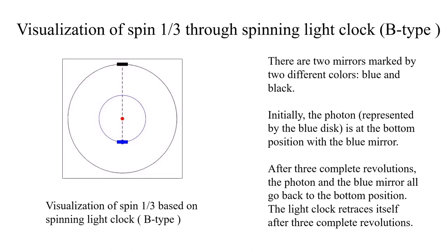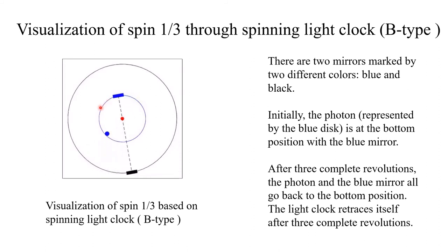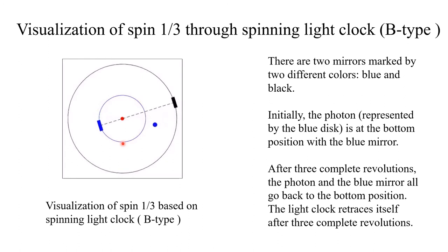Now, the B-type spinning light clock is used to visualize spin 1 over 3. Initially, the photon is at the bottom position, and then the light clock starts spinning. After half a revolution, the photon reaches the half-revolution position. Next, we proceed to one complete revolution.